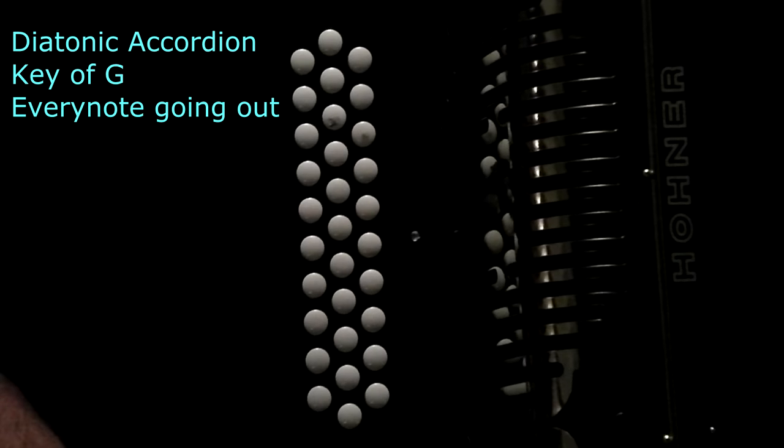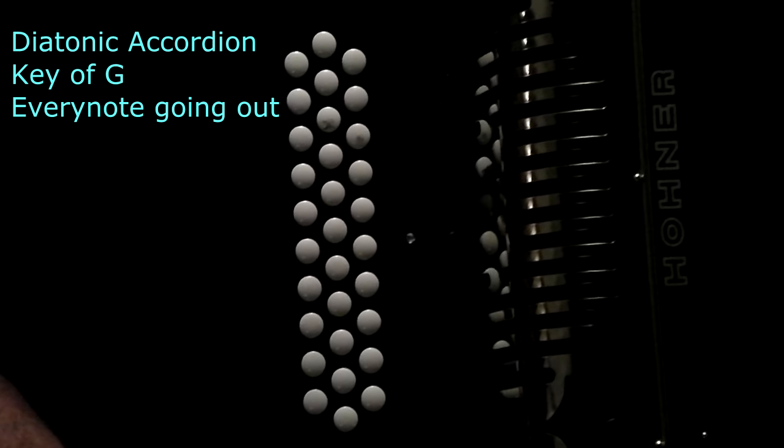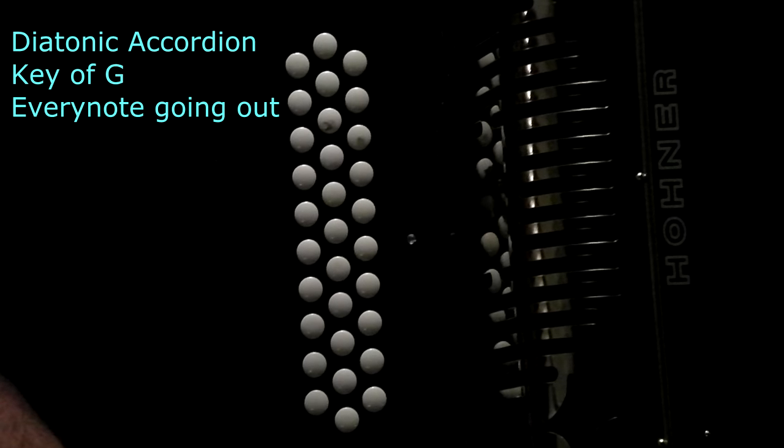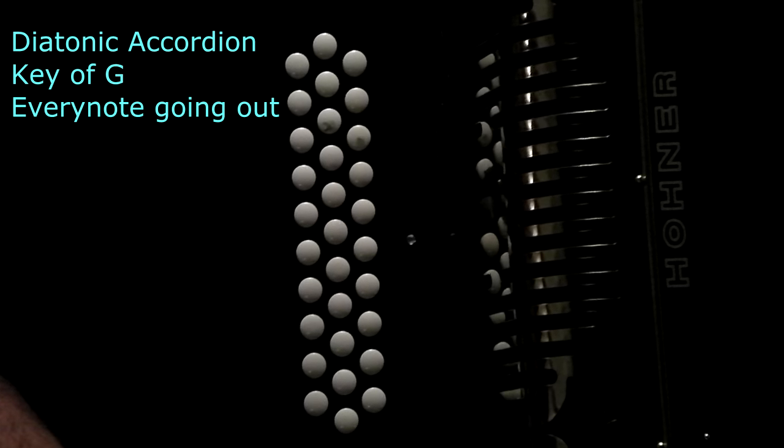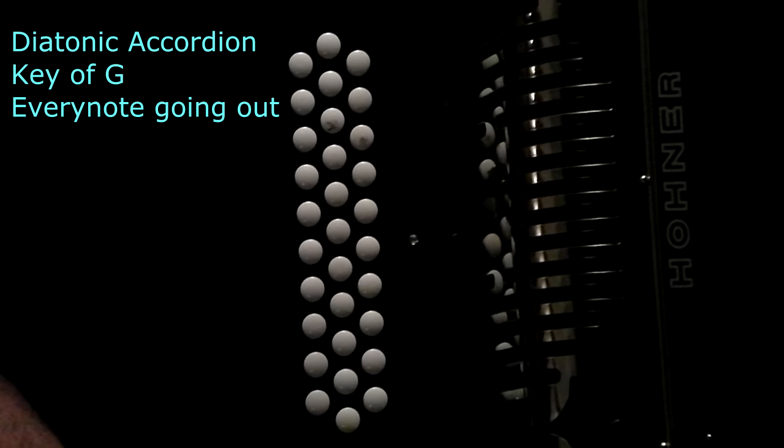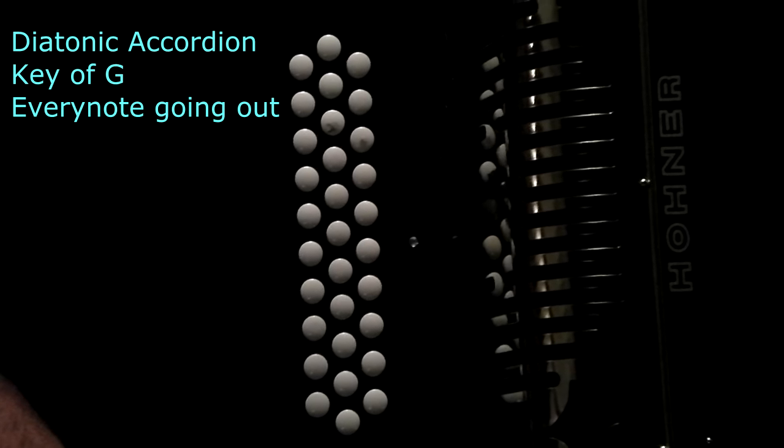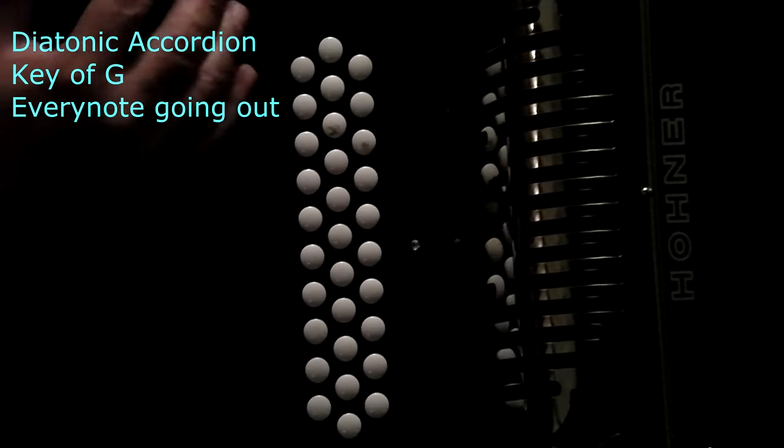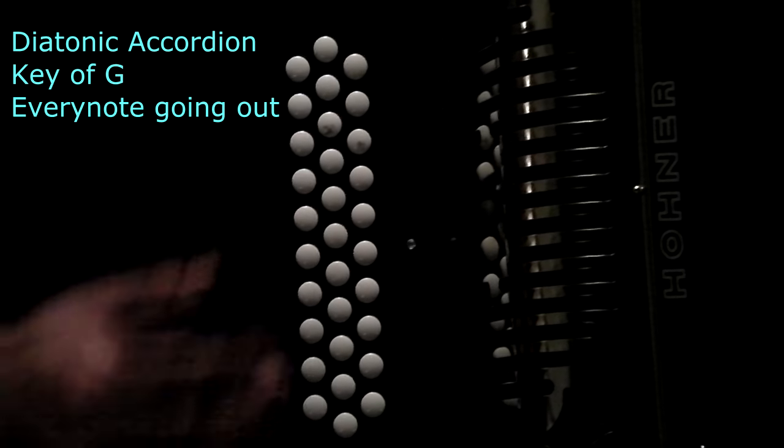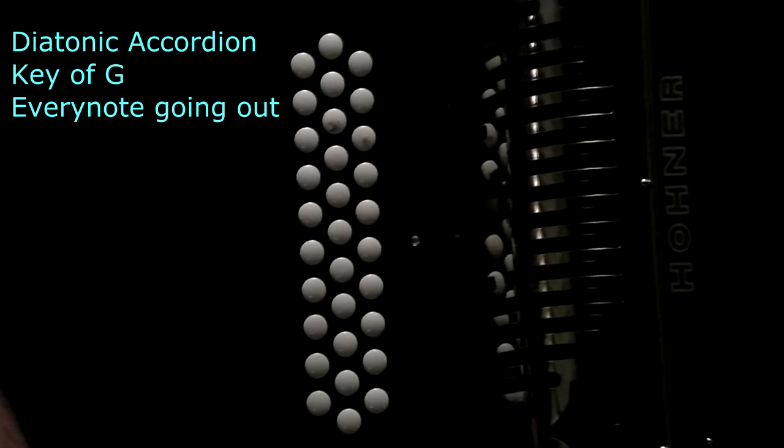Hello YouTubers. Hola gente YouTube. Here's a great video for anyone who's just starting, taking their first steps at learning a diatonic accordion. This is a Hohner Panther key of G. In Spanish it's called Sol.